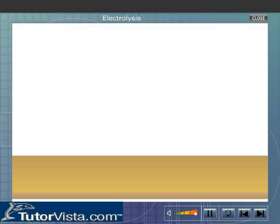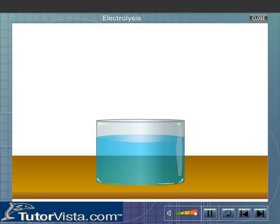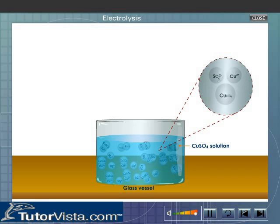Let us see how an electrolyte dissociates when electric current passes through it. Take a wide glass vessel containing a saturated solution of copper sulphate. The aqueous copper sulphate solution dissociates into copper ions and sulphate ions.